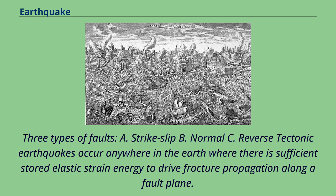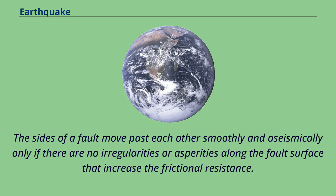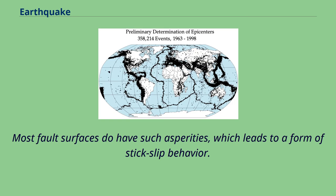Tectonic earthquakes occur anywhere in the earth where there is sufficient stored elastic strain energy to drive fracture propagation along a fault plane. The sides of a fault move past each other smoothly and aseismically only if there are no irregularities or asperities along the fault surface that increase the frictional resistance. Most fault surfaces do have such asperities, which leads to a form of stick-slip behavior.